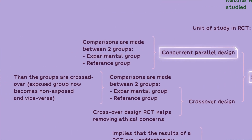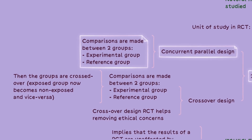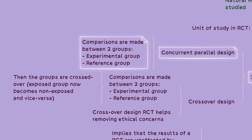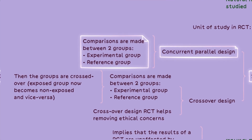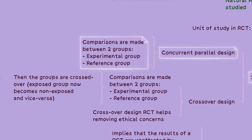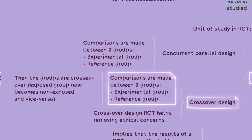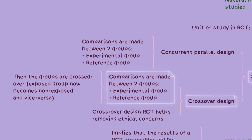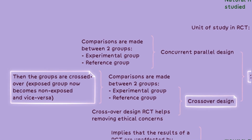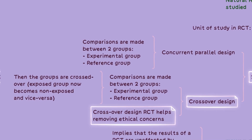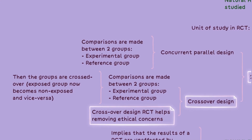In the concurrent parallel design, comparisons are made between two groups: the experimental group, which receives the specific medication or intervention, and the reference group, which does not. In crossover design, participants initially belong to either the experimental or reference group. After a certain period, the groups are crossed over, where the exposed group becomes non-exposed and vice versa. This design helps address ethical concerns and allows each participant to serve as their own control.